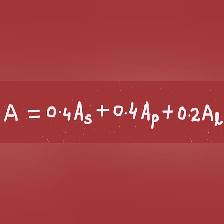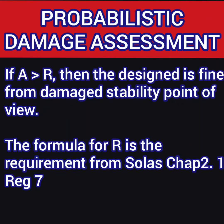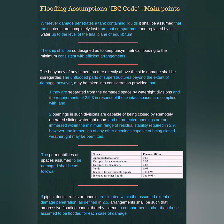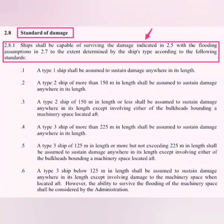If the attained subdivision index is greater than the required subdivision index, the plan is accurate and construction can proceed. The required subdivision index formula comes from SOLAS Chapter 2, Part 1, Regulation 7. There are many deeper requirements about damage stability in the IBC code, including damage assumptions such as the extent of damage — longitudinal, transverse, and vertical — on the ship's side or bottom, flooding assumptions, and standards regarding where along the ship's length the damage is located.